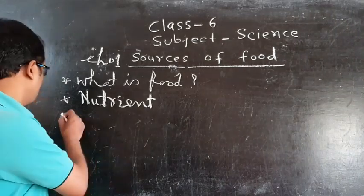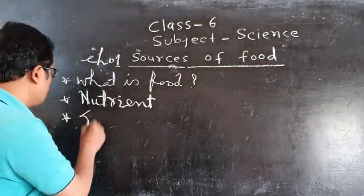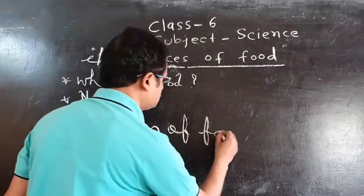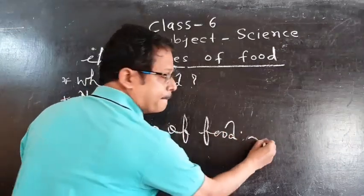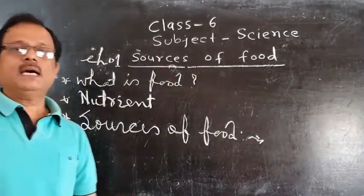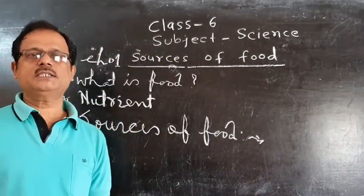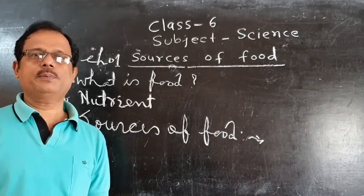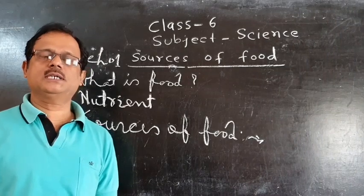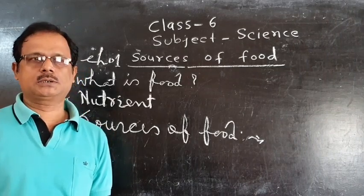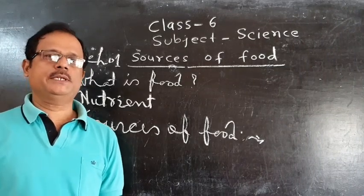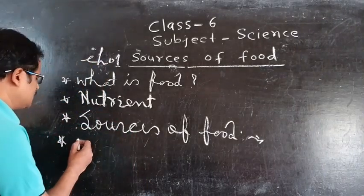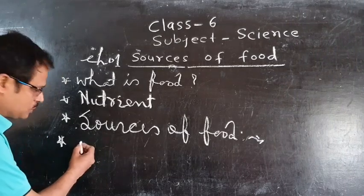Next, what are the sources of food? There are two important sources of food. First is plants and second is animals. We obtain various types of food from plants and also various types of food from animals. Now let's talk about why food is necessary for us, or the importance of food.